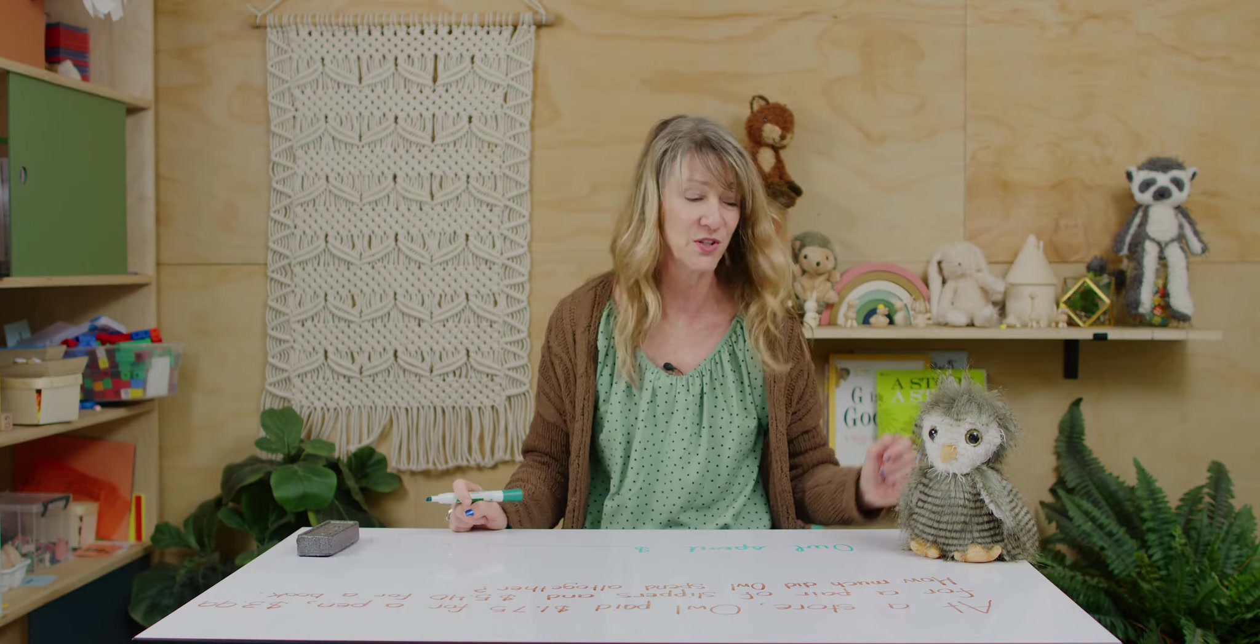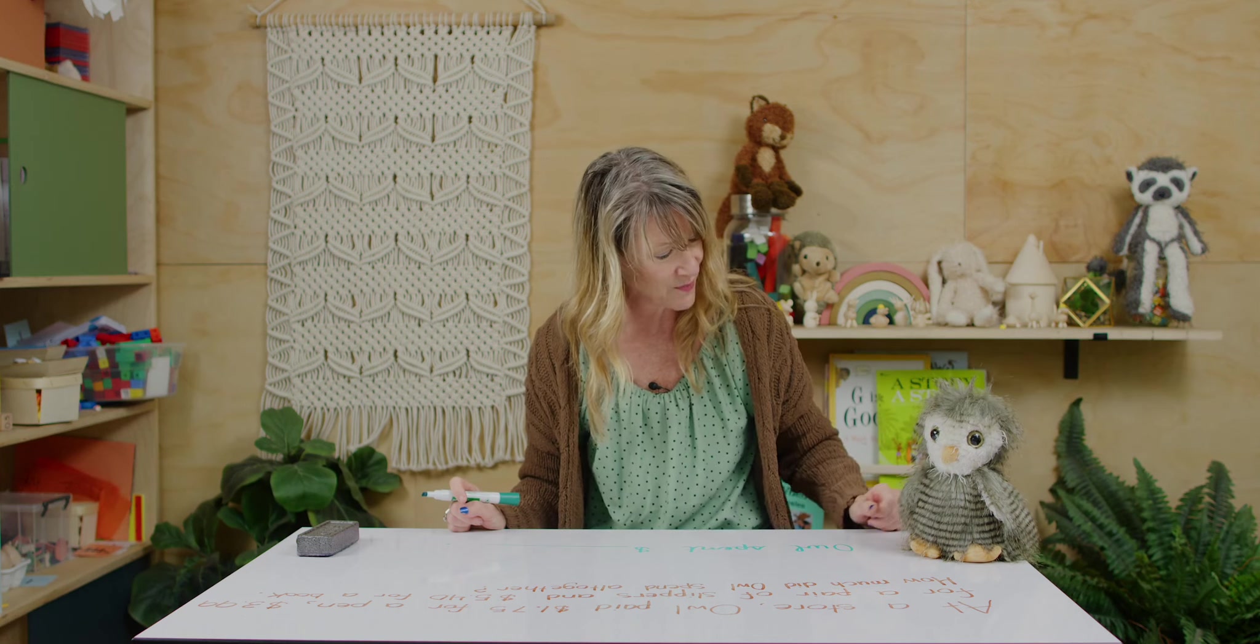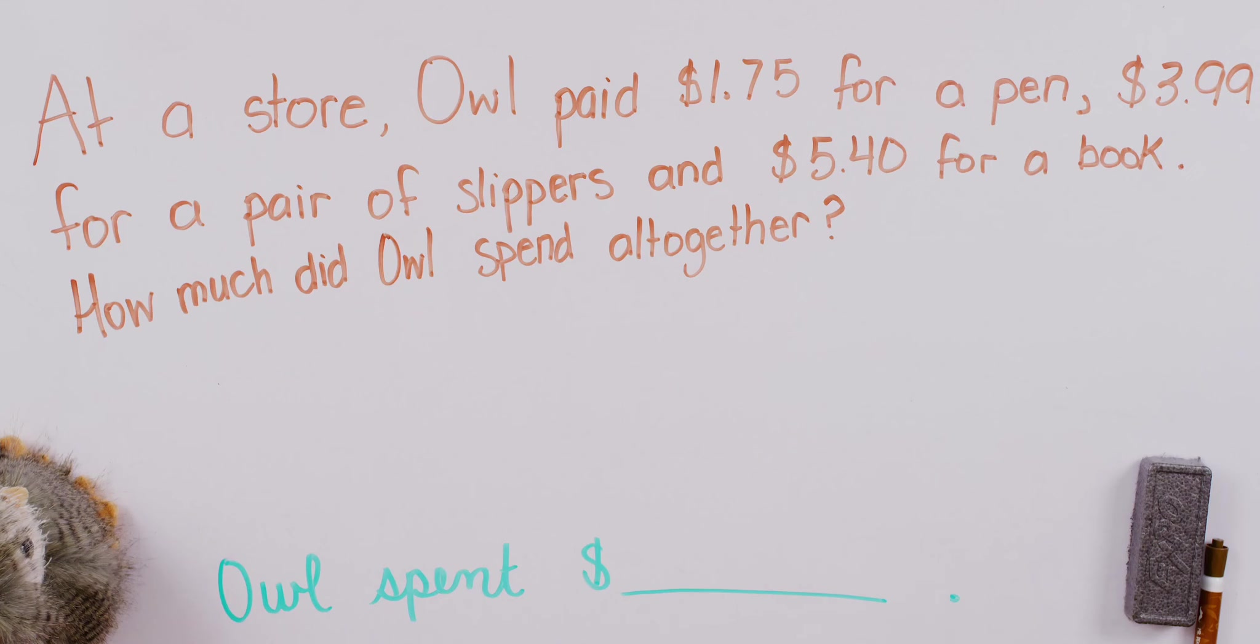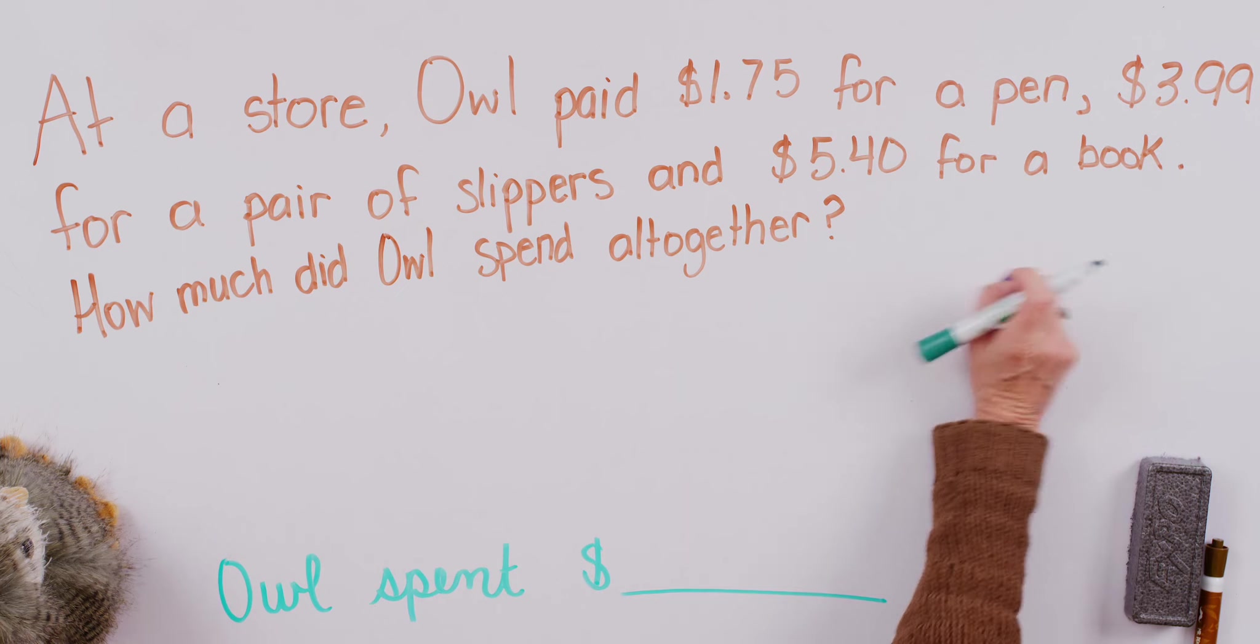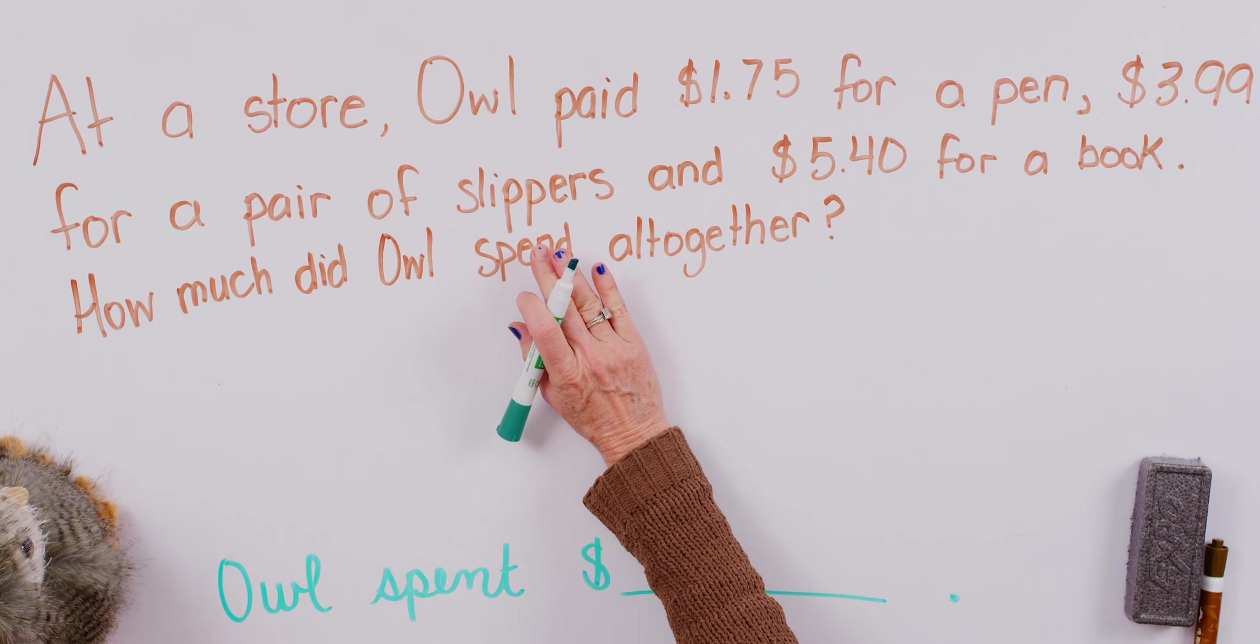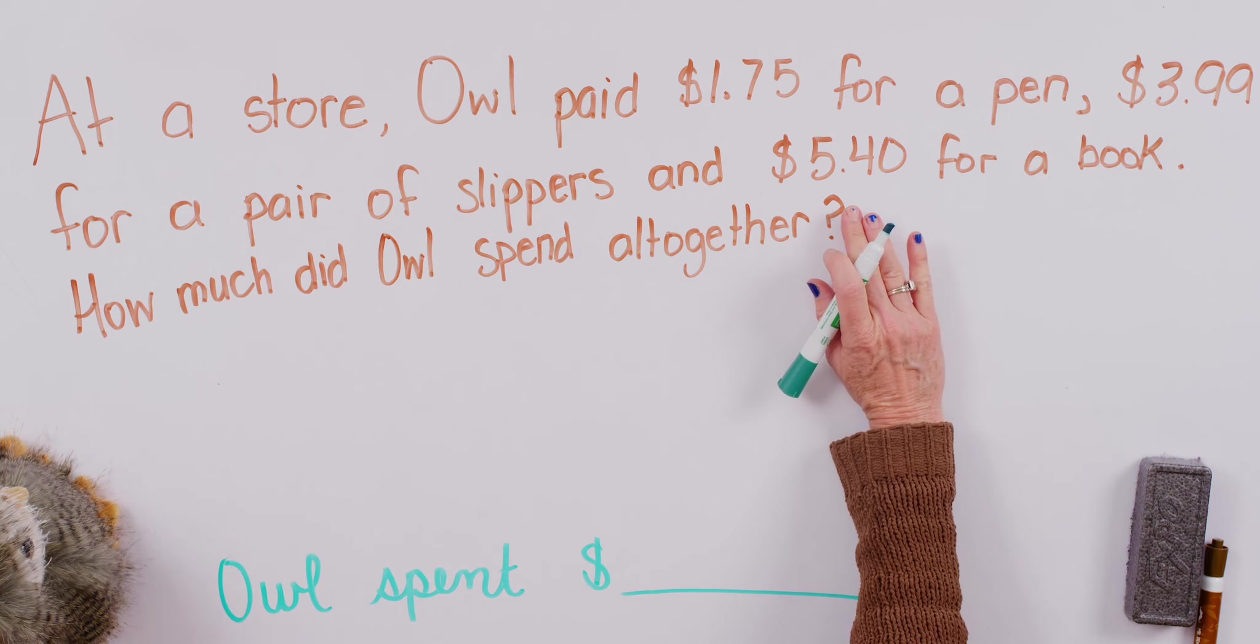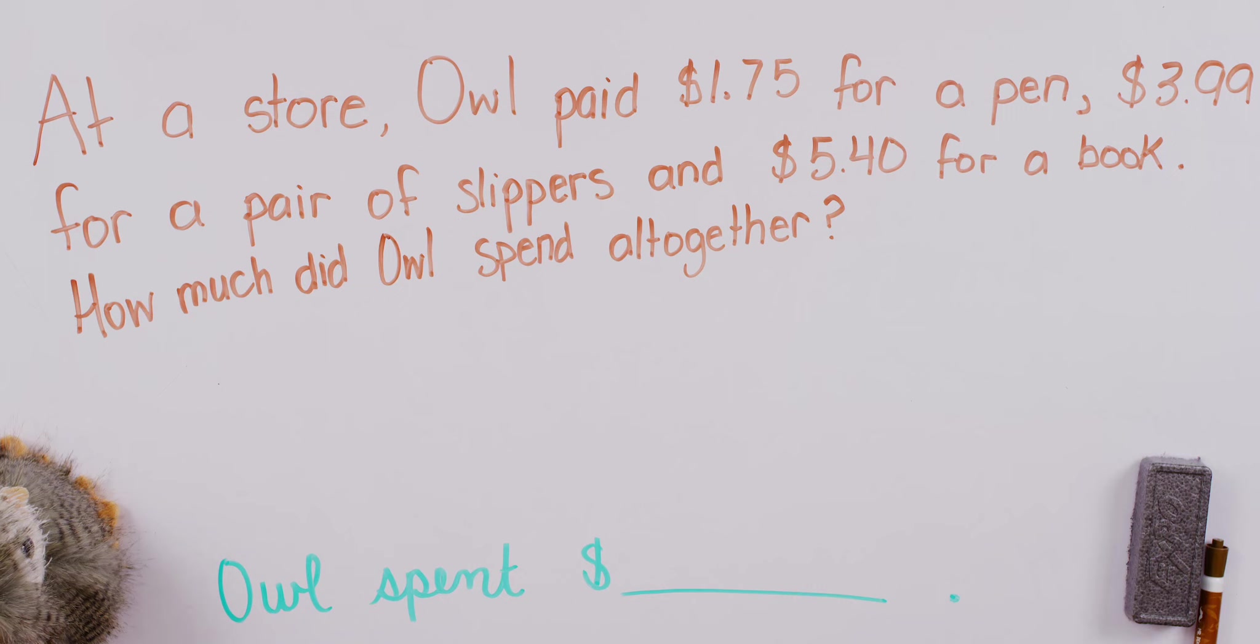For our first number story, we've got Owl going shopping. Some things you have to pick up there, huh? At a store, Owl paid $1.75 for a pen, $3.99 for a pair of slippers, so cozy for Owl's little claws, and $5.40 for a book. We want to know how much Owl spent all together.